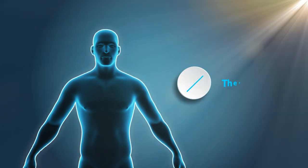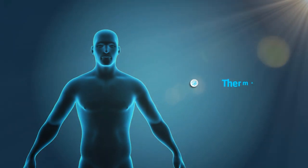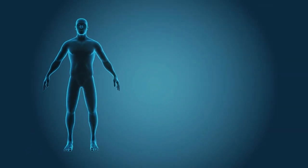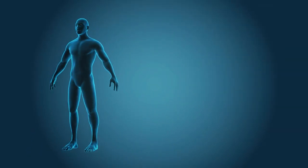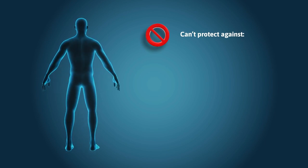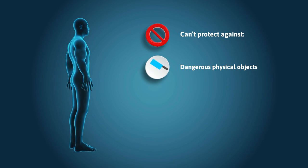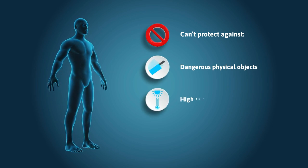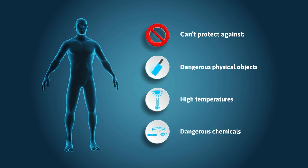Additionally, the skin acts as a shield, safeguarding us against thermal and physical injuries. However, it's important to note that while the skin is a powerful shield, it cannot protect us from all dangers. Examples include being unable to defend against various physical objects like knives, extreme temperatures, or dangerous chemicals.